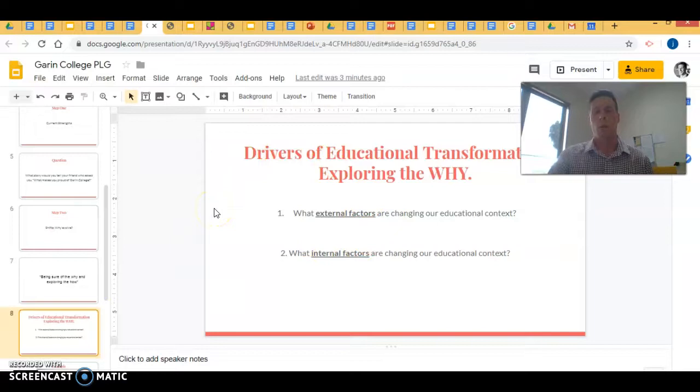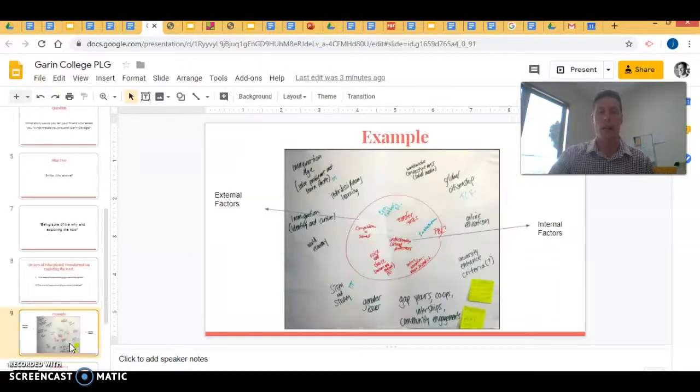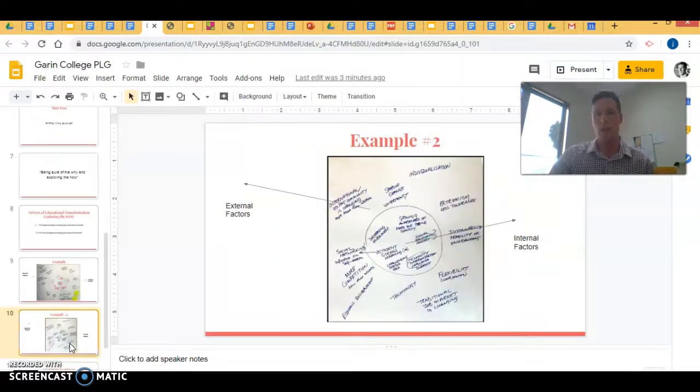On this slide, it's a discussion point. You talk about what are the external factors changing education in Aotearoa. And then secondly, a discussion point is what are the internal factors that we believe are shifting education at Gowron College. There's a couple of examples here as well.